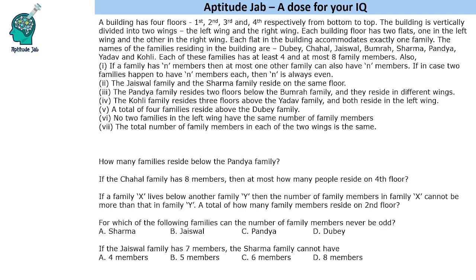Each building floor has exactly two flats, one in the left wing and one in the right wing. So you have floor numbers four, three, two, one — each with a left wing and a right wing. Each flat in the building accommodates exactly one family, so there are eight families living in these eight flats.